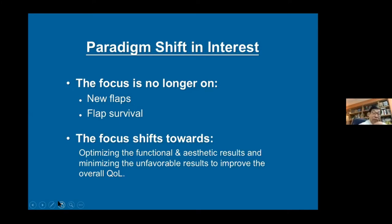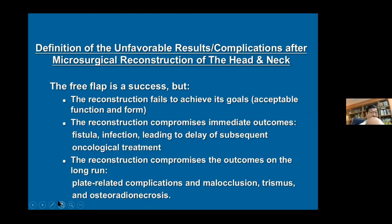The definition of a successful outcome means that even when the flap survives, we can achieve a desirable outcome. The definition of an unfavorable result and complication in microsurgical reconstruction includes: when the reconstruction fails to achieve its goal — acceptable function and form — although the flap survived; when reconstruction compromises the immediate result; or when there is post-operative infection leading to delay of subsequent oncology treatment.